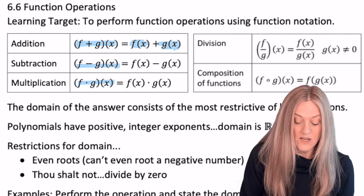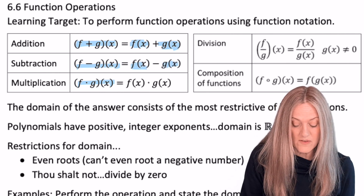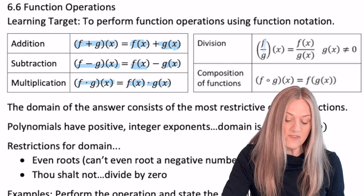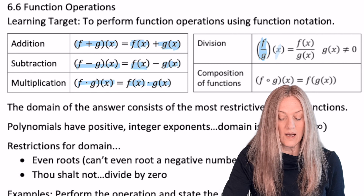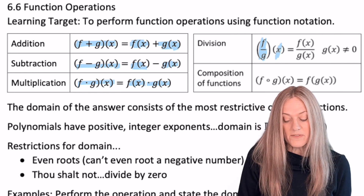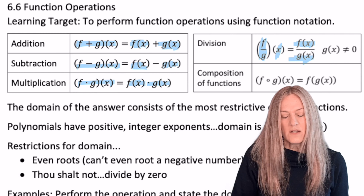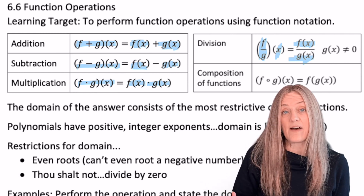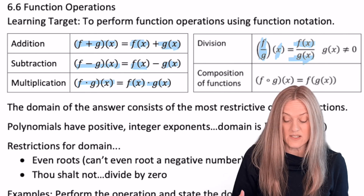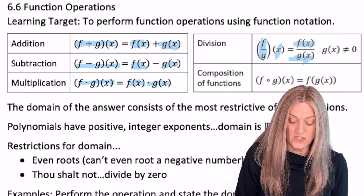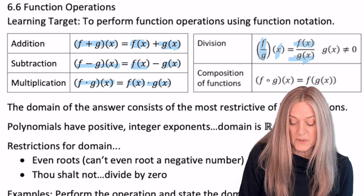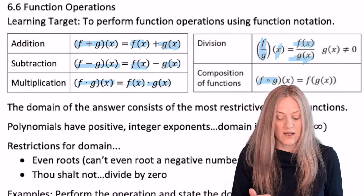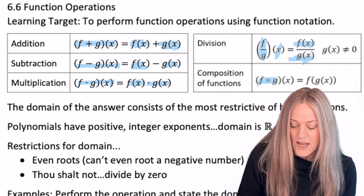Given f minus g of x and f times g of x, the equivalent statements are f of x minus g of x and f of x times g of x. For division, we have f divided by g of x, often written as f of x divided by g of x. Be aware of those two notation systems. Last is composite functions — different from multiplication because it uses an open circle: f of g of x, which looks like 'fog' but isn't.